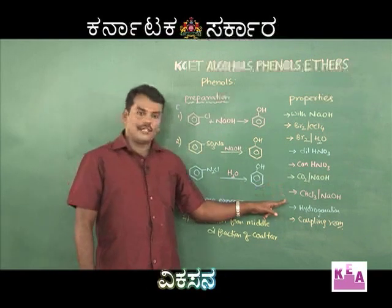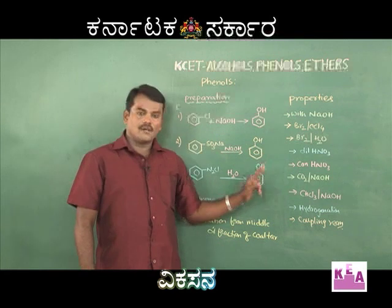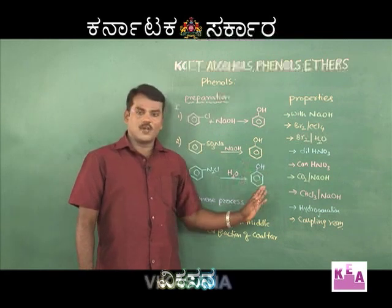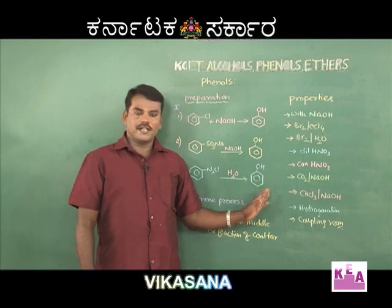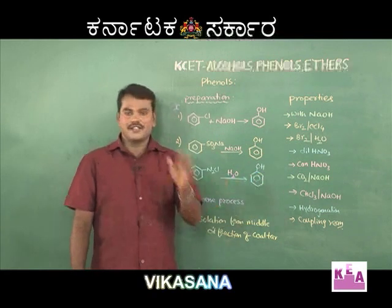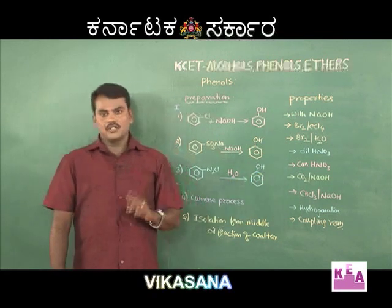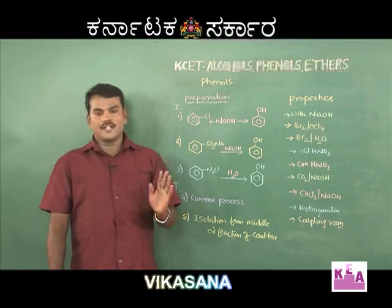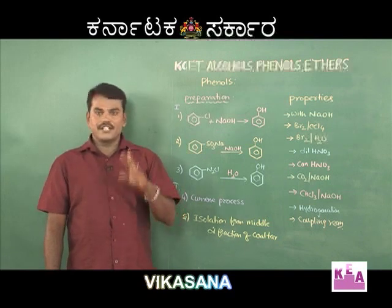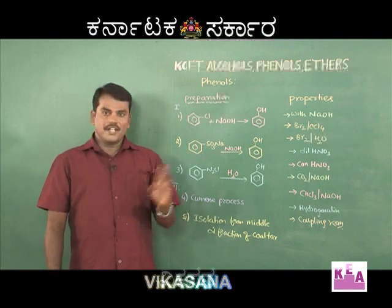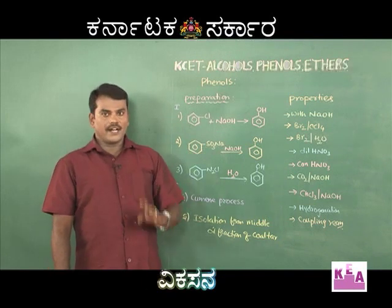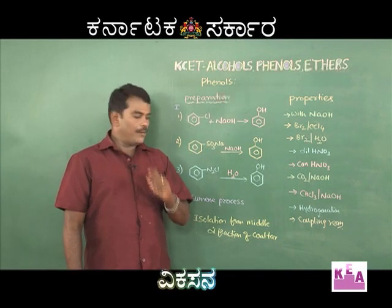When phenol is treated with carbon tetrachloride in the Reimer-Tiemann conditions, you will get salicylic acid. Both reactions — using chloroform and using carbon tetrachloride — are variants of the Reimer-Tiemann reaction, and this is a very important named reaction.